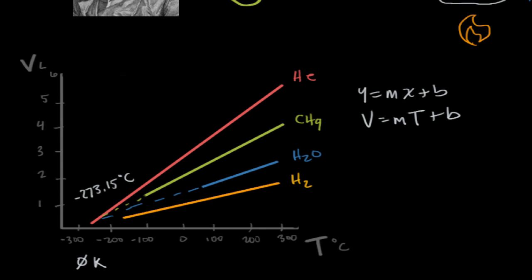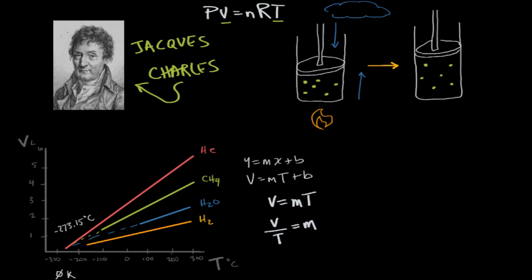If we take our equation, which is V equals MT, we don't need the B because our y-intercept is zero. If we move some variables around, we'll see that V divided by T is equal to M. In other words, the quotient of our volume divided by our temperature is constant, as long as the sample size is the same, so the same number of moles and the pressure doesn't change. This is exactly the concept that we've applied to our ideal gas equation.